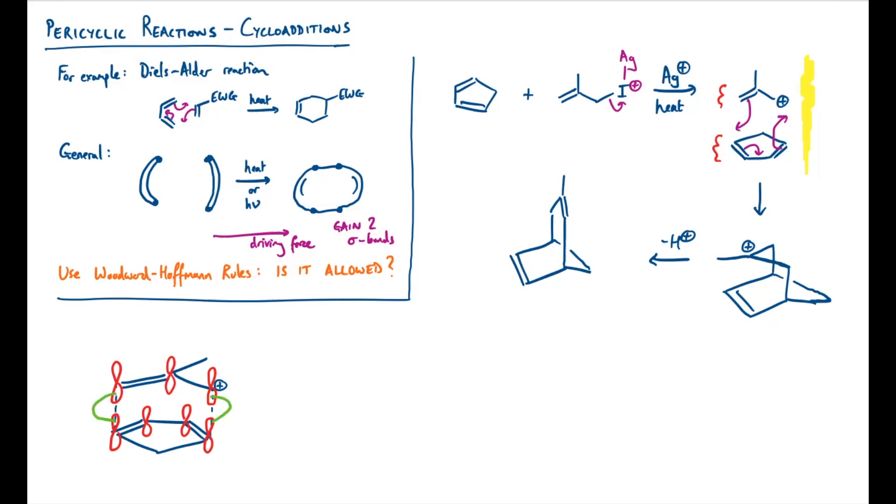Then we need to use the Woodward-Hoffman notation. The allyl cation has two electrons in it and it's made of a pi system, so we normally give it a qualifier like a subscript of pi. The bottom system has four pi electrons in it, so we call it a pi-4 system.